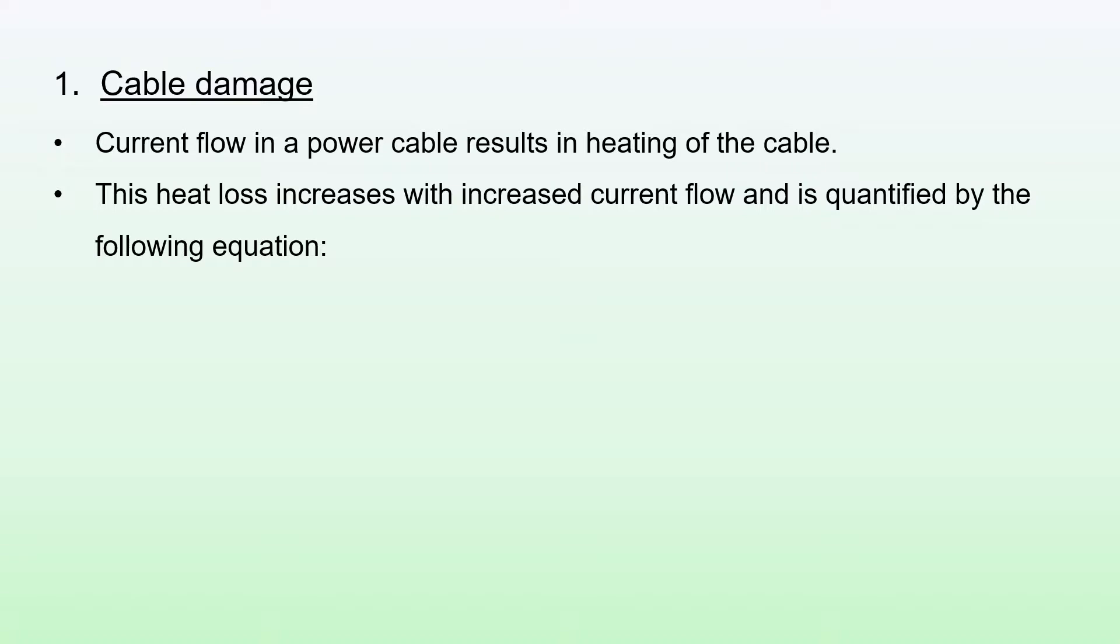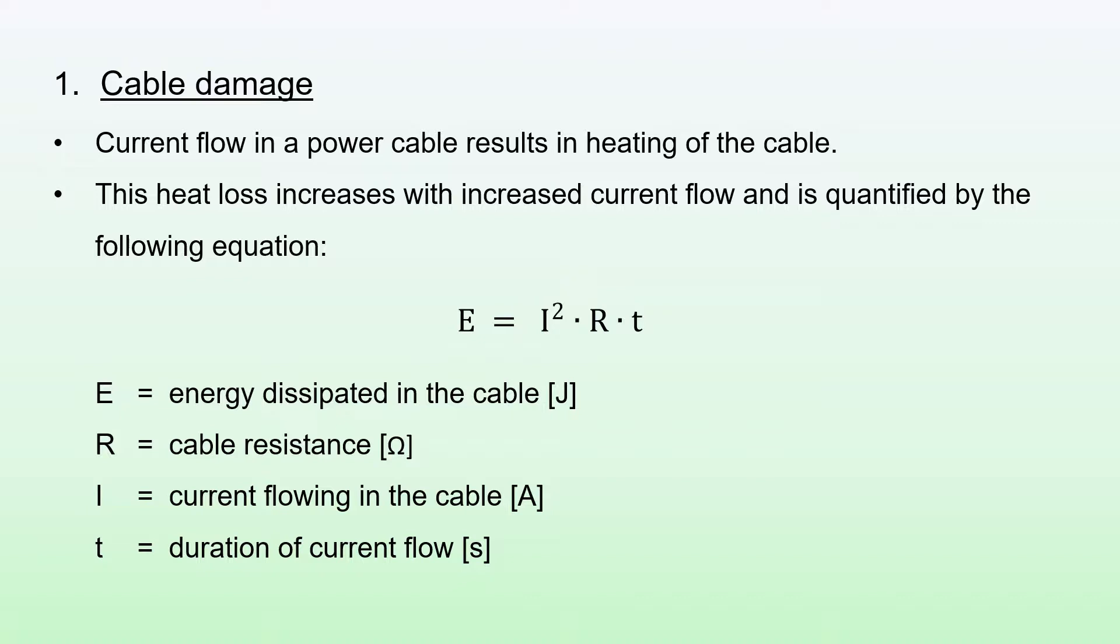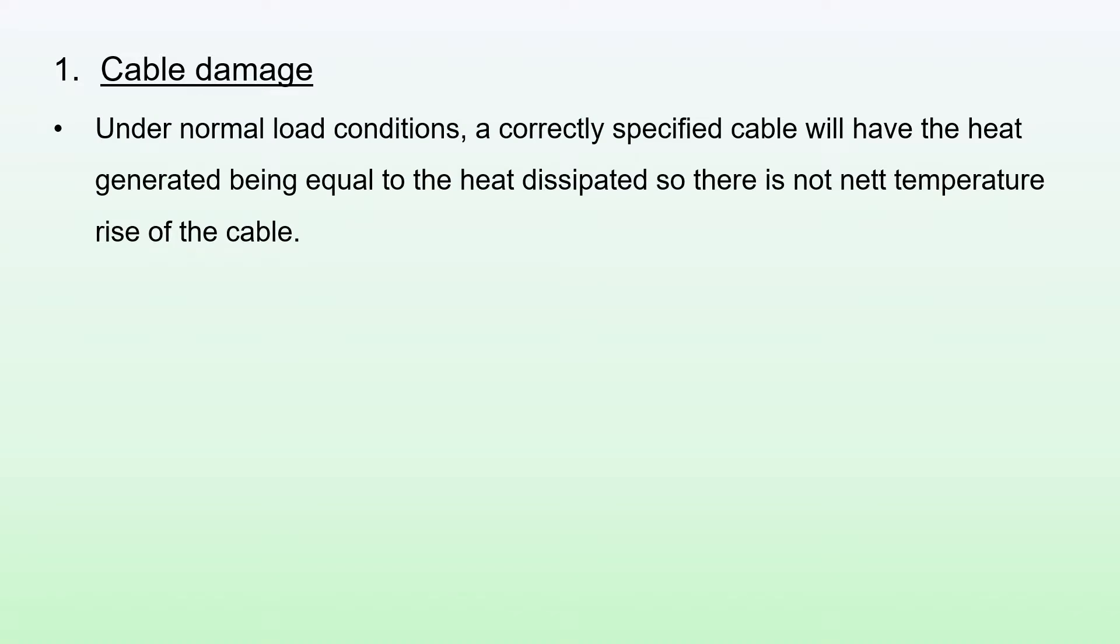Let's consider cable damage. Current flow in a power cable results in heating of the cable. We have current flowing, there's resistance in the cable, and so due to the resistance we have an I squared R loss, manifested as a heat loss in the cable. This heat loss increases with increased current flow and is quantified by the equation E equals I squared RT, where E is the energy dissipated, R is the cable resistance, I is the current flow, and T is the duration of current flow.